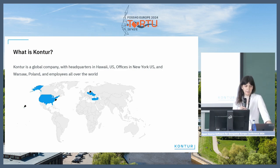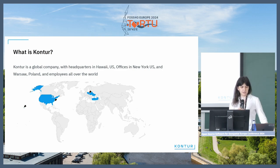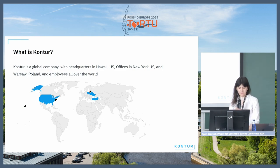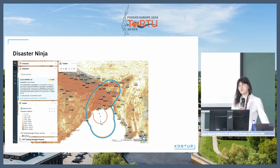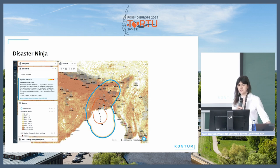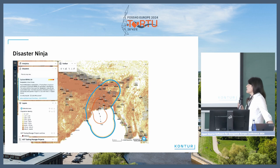For HOT, we developed applications like Disaster Ninja. It's an open source platform that provides metrics on the quality of the map and features like disaster information, counter-population data, and the ability to select an area of interest and get analytics.